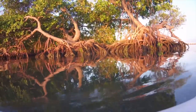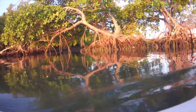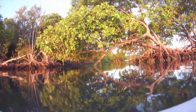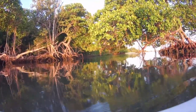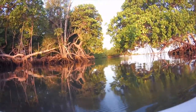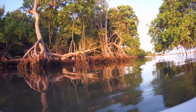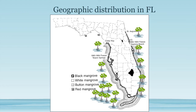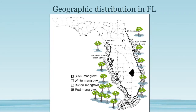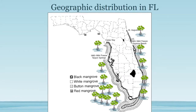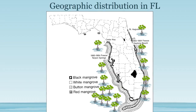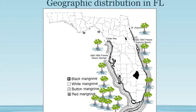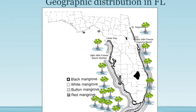Mangroves are trees that live in calm, intertidal areas where temperatures generally do not drop below freezing for extended periods of time. They are circumglobal, with the majority of populations found between latitudes of 30 degrees north and south. Here in Florida, mangroves generally exist south of St. Augustine on the east coast and south of Cedar Key on the west coast. The largest populations are in the 10,000 Islands area and Florida Bay — about 500,000 acres in total.